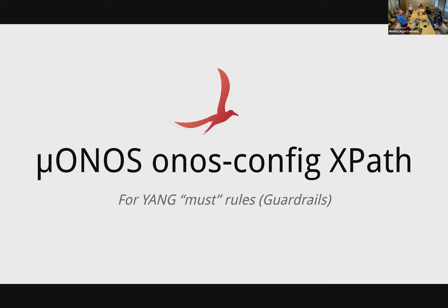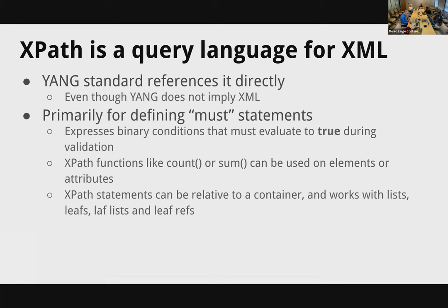The must rule must evaluate to a true or false condition. They're written in XPath — XPath is a query language for XML, and older folks will have suffered the pain of XML and know what XPath is all about. It's a very flexible language. YANG chose XPath because YANG was originally used with NETCONF, which did imply XML. XPath primarily defines must statements that express binary conditions which must evaluate to true for validation, and it can use functions like count or sum on elements or attributes of the YANG model.